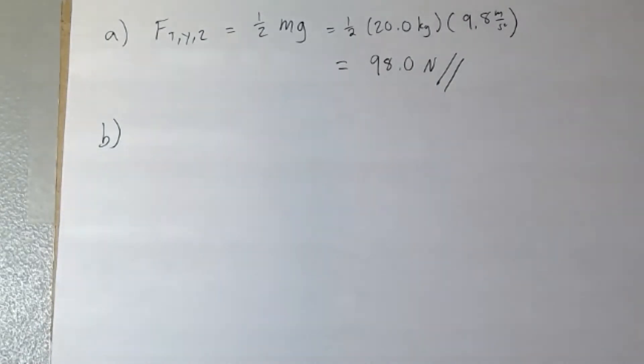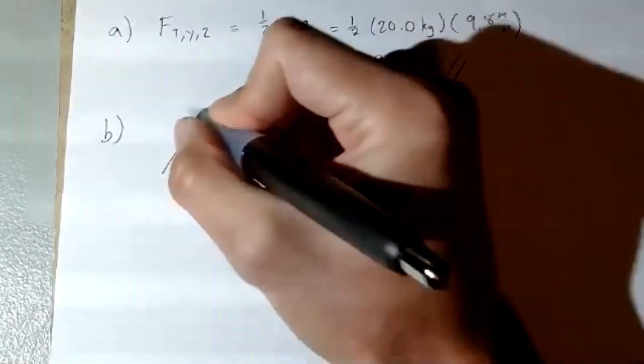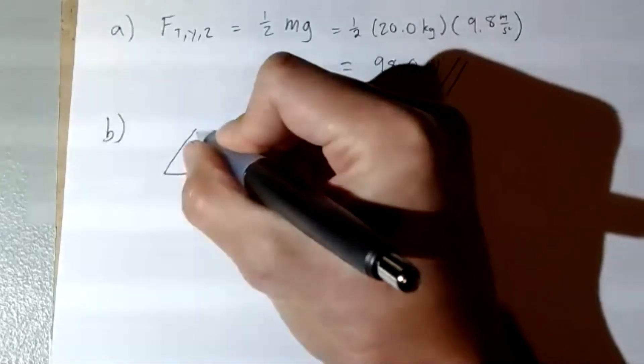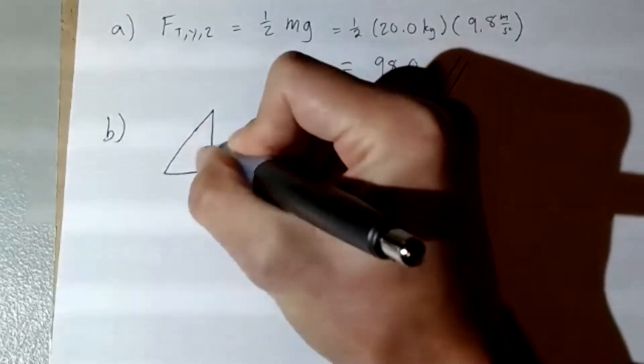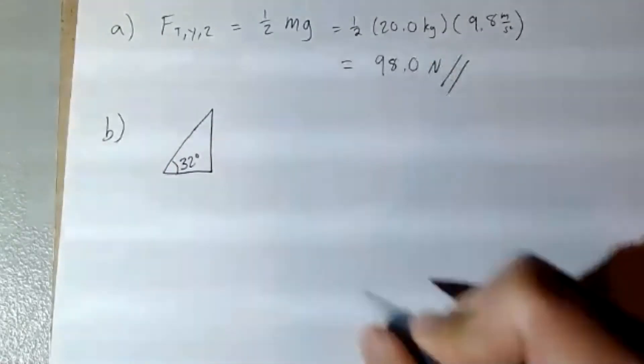So we know that the rope is angled at 32 degrees from the horizontal. So if you were to draw a triangle, and this is kind of a weirdly shaped triangle, but we'll just say this is 32 degrees.